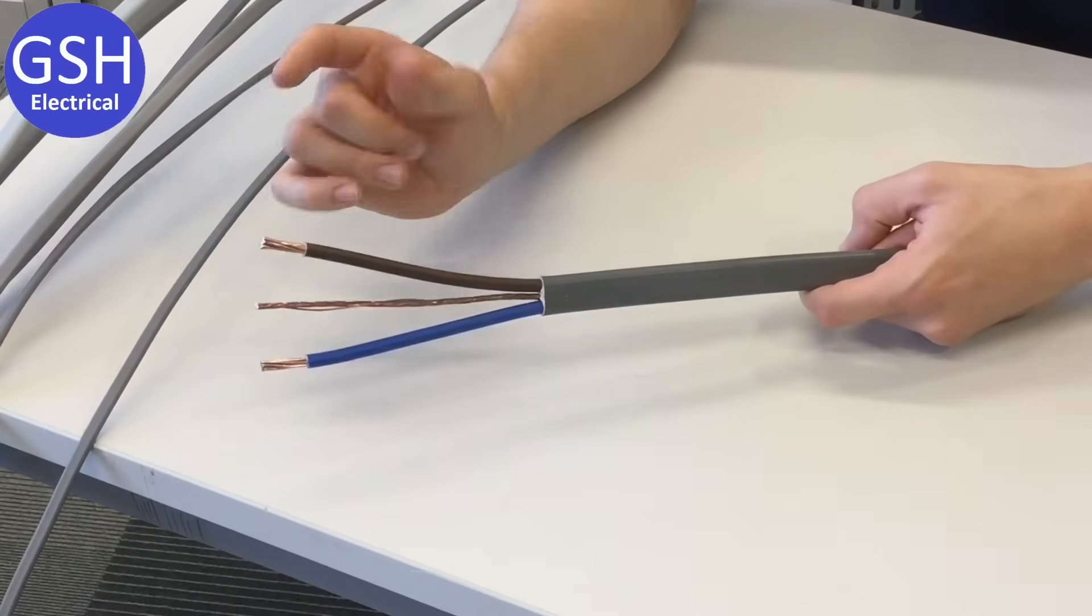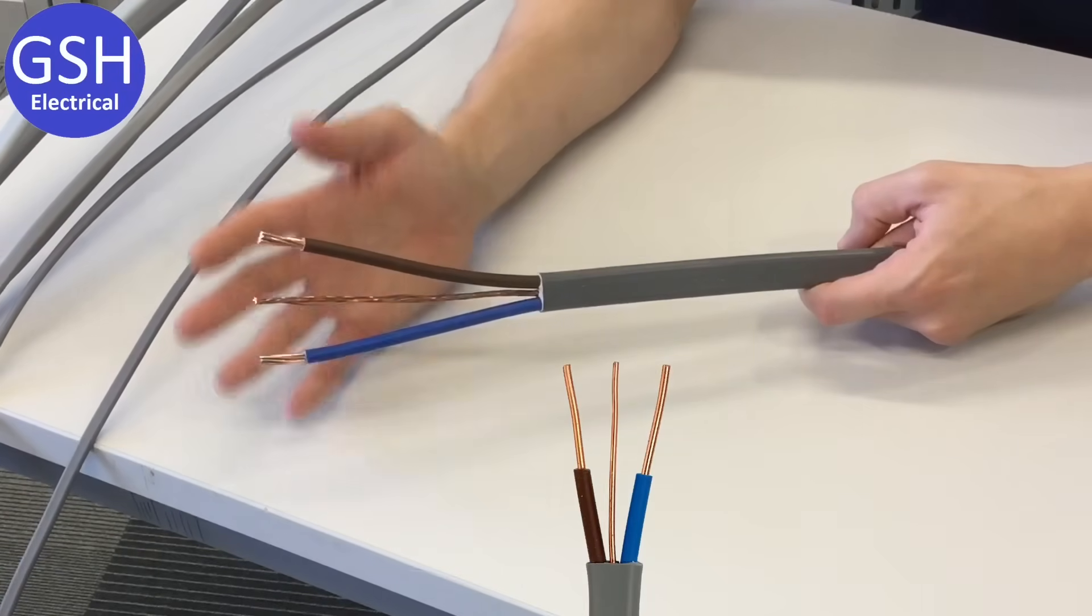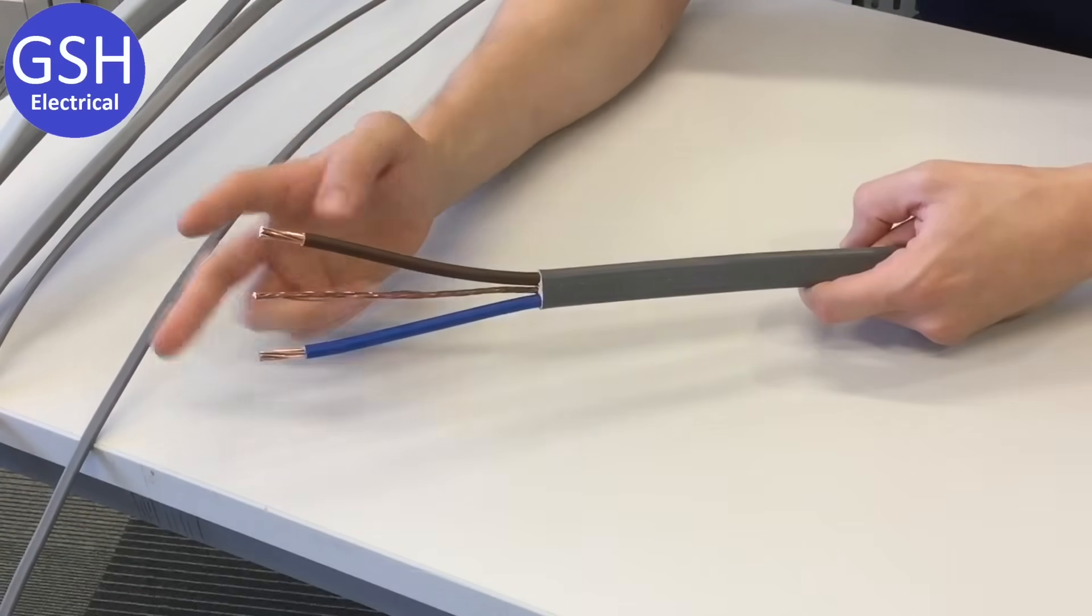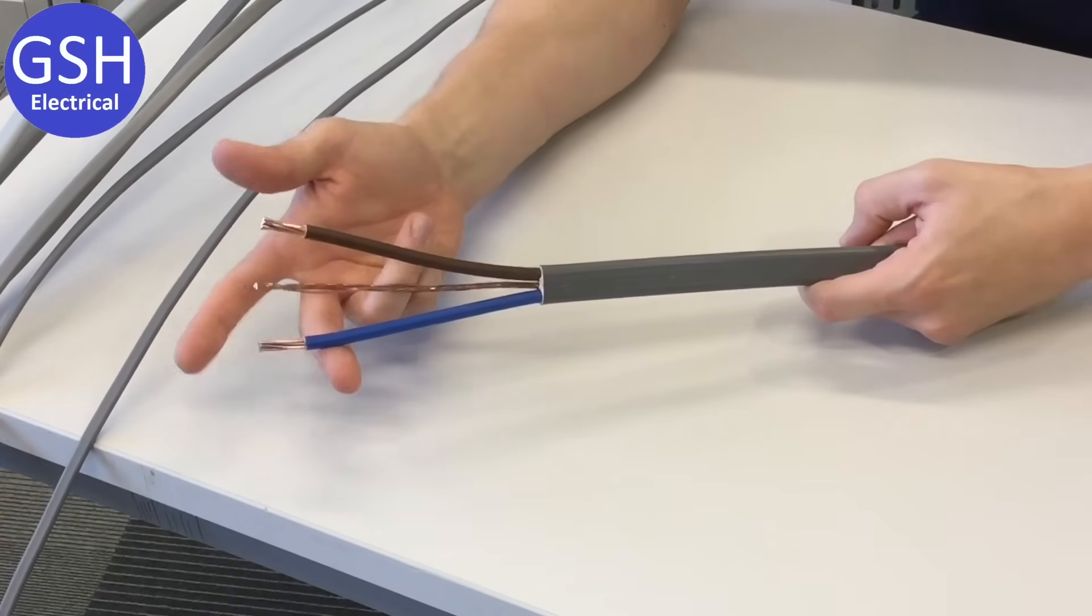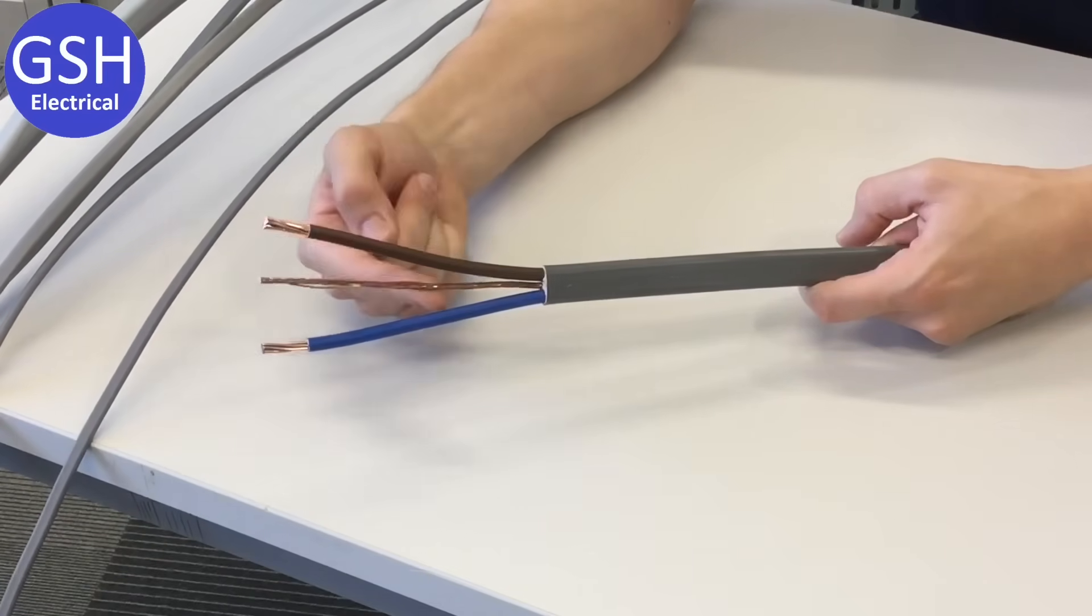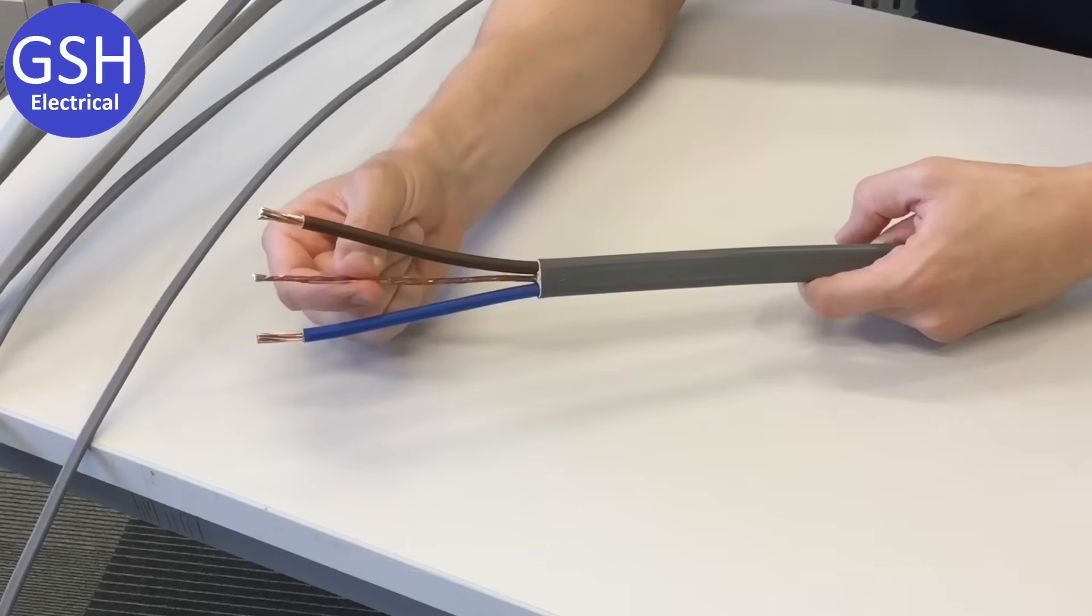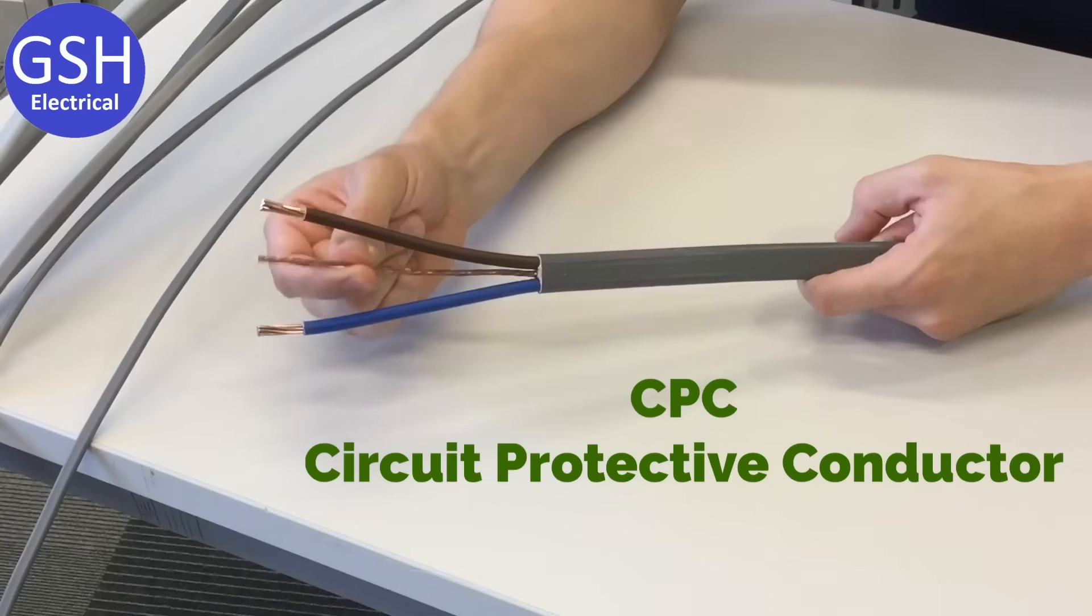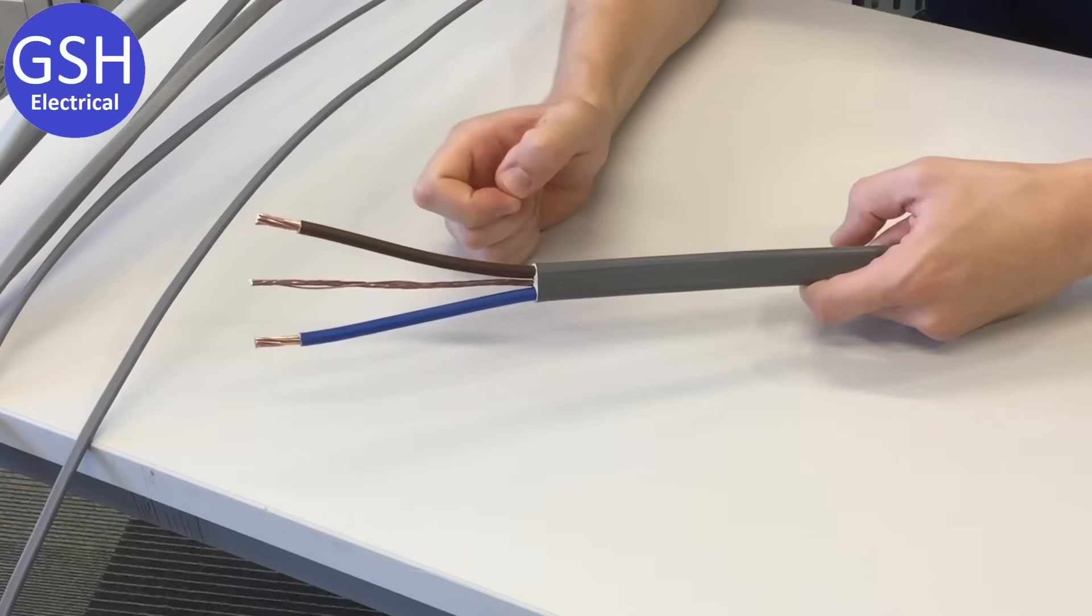We then move on to the part where we talk about this being twin and CPC. Now you may be looking at this cable and thinking, but Joe, there's three conductors there. We only actually count the insulated conductors. You can see here that we've got one insulated conductor, two insulated conductors, so that's where our twin comes from. And then we've got CPC, which is this conductor in the middle. Again, you'll often hear this be referred to as earth. This is not an earth cable, an earth conductor. This is technically a CPC, but again the difference between those will be covered in another video.